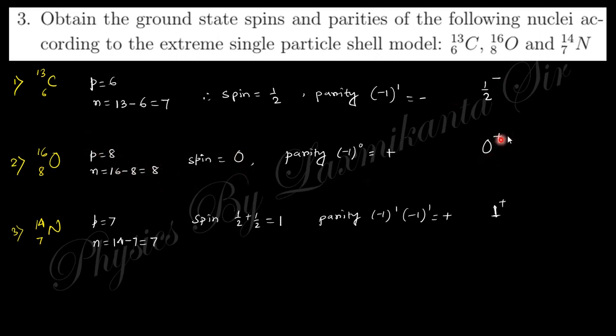This is spin and this is parity. For this one, these two are even, so both are zero, so this will be 0⁺ where it is plus. For nitrogen-14, seven and fourteen, seven-seven, these are both odd so there is excess proton and excess neutron. For one that is half plus half equals one, and parity is plus, so this is 1⁺.